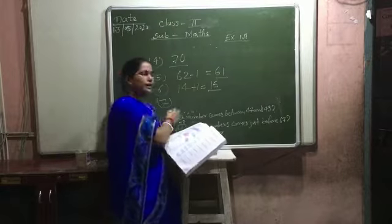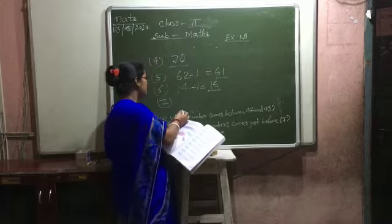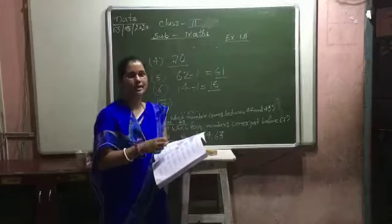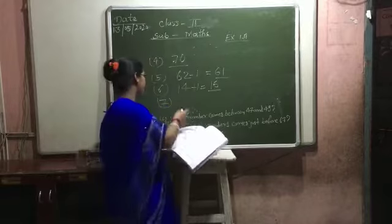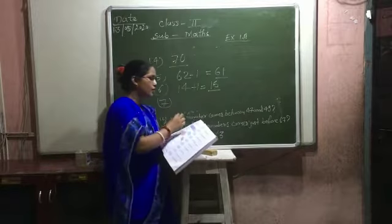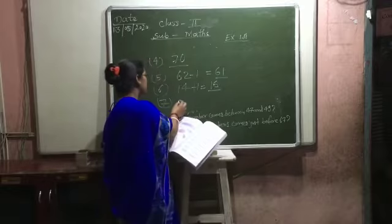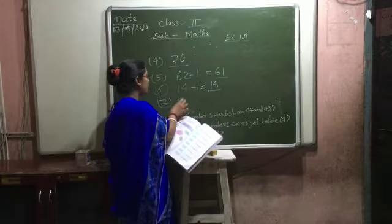Let me explain how to write these in descending order. We start from the largest number and go to the smallest. We'll write from 31 down to 22.